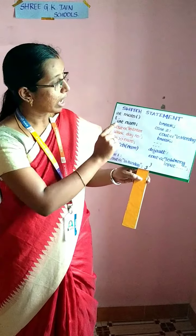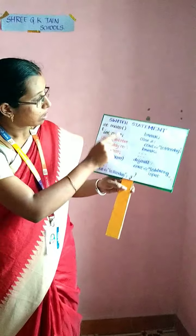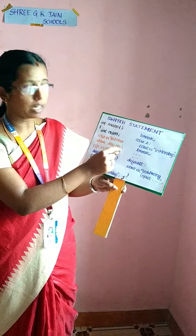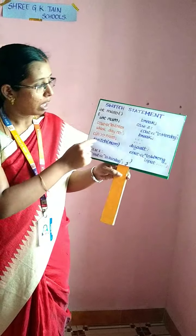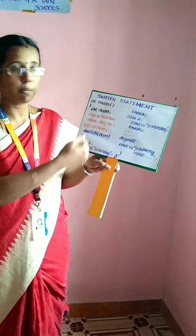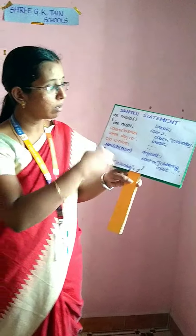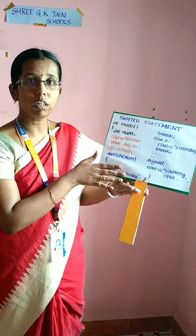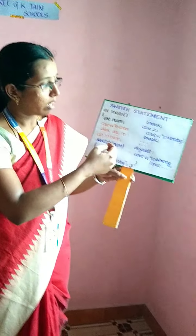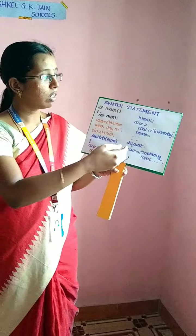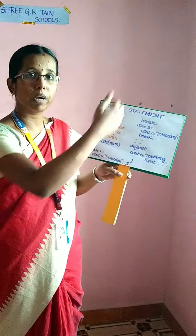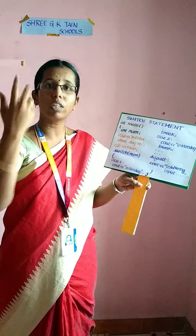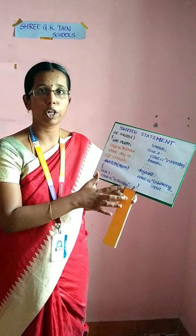Here is an example for the switch statement. Inside my main function, I am declaring the variable num. In the cout statement, I am giving the output as enter weekday number. Whatever number is entered by the user will be assigned to the variable num, and that value will be given to the switch statement for condition checking. Suppose the user gives the number 2: case 1 will not execute; it will move to case 2, and the output will be Monday. If the user gives 7, the output will vary accordingly. If the user gives more than 7, the default case executes and the output will be wrong input. So this is an example for your switch statement.